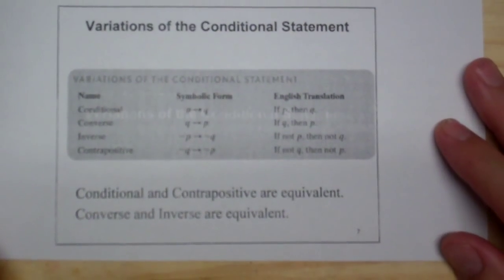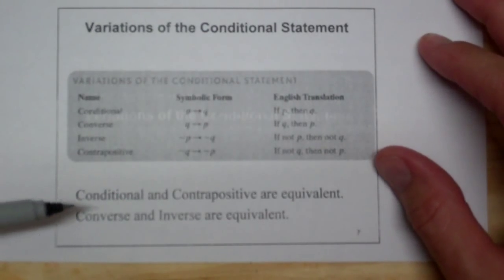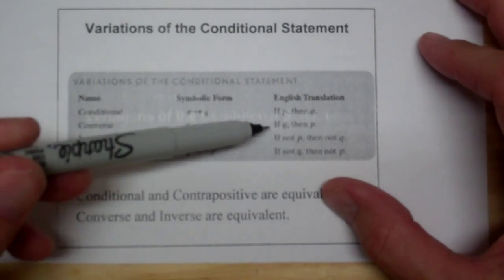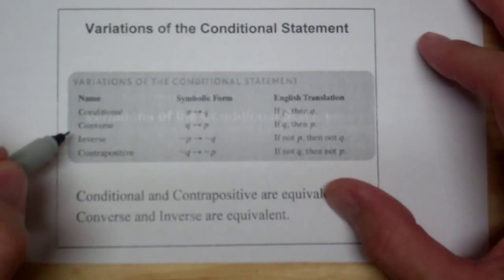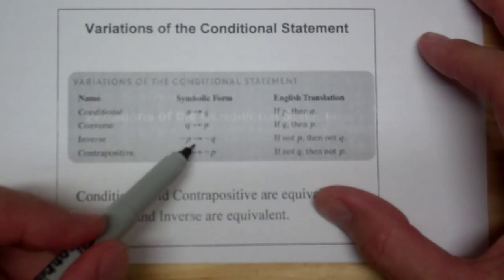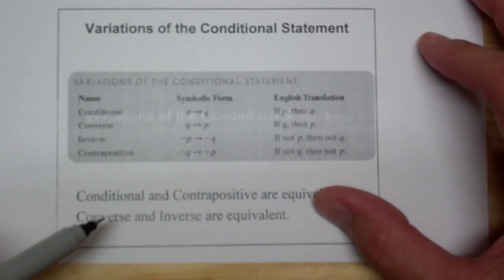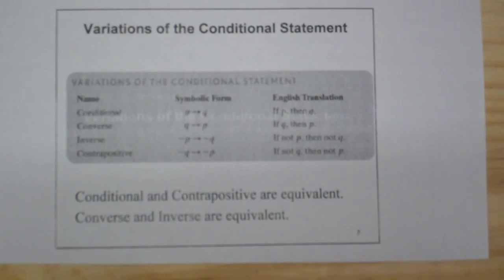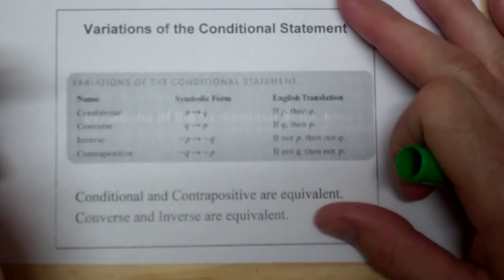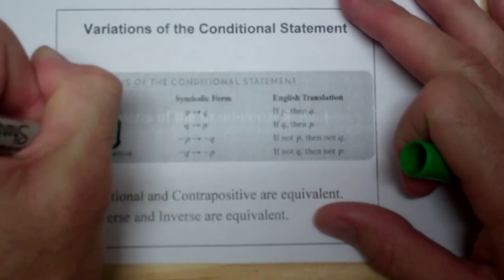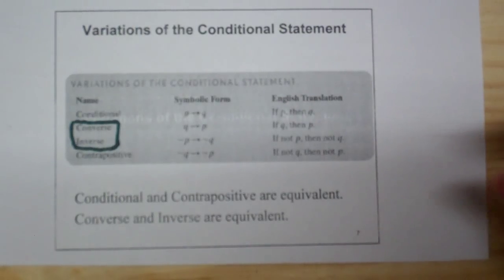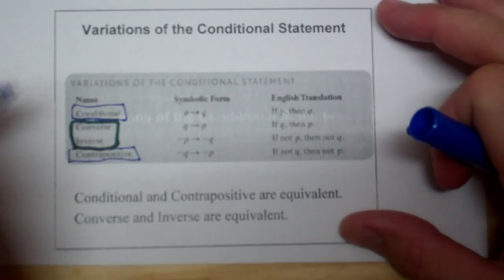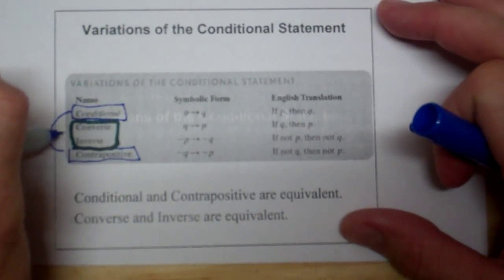There are actually four ways you can manipulate a conditional statement. The converse is Q→P — not equivalent. The inverse is ¬P→¬Q — also not equivalent to the original. The only equivalent is the contrapositive: ¬Q→¬P. The converse and the inverse are equivalent to each other, and the conditional and the contrapositive are equivalent to each other.